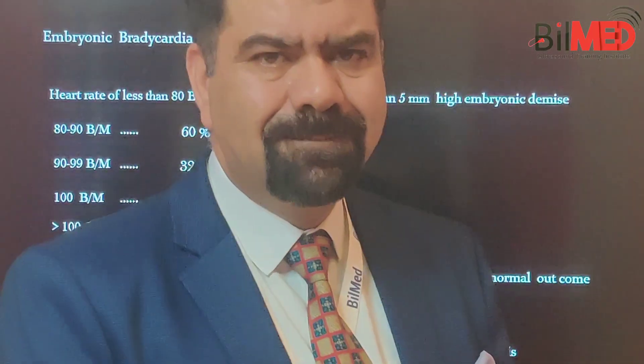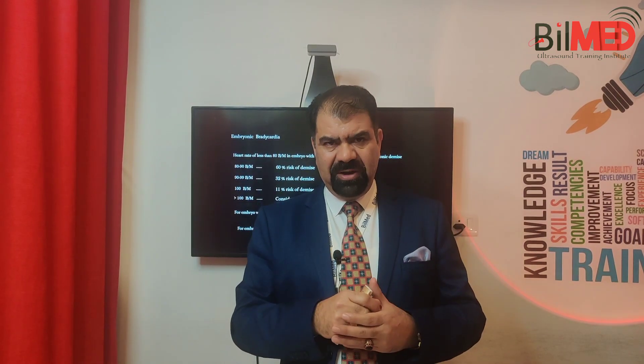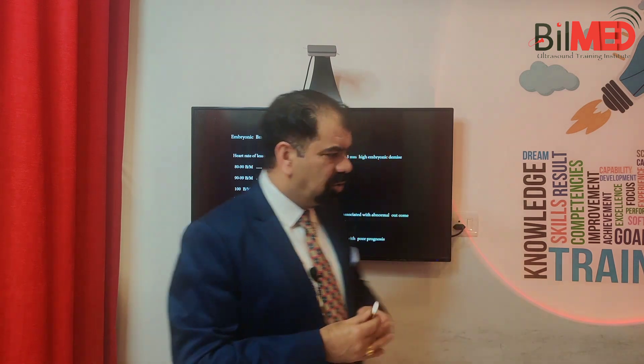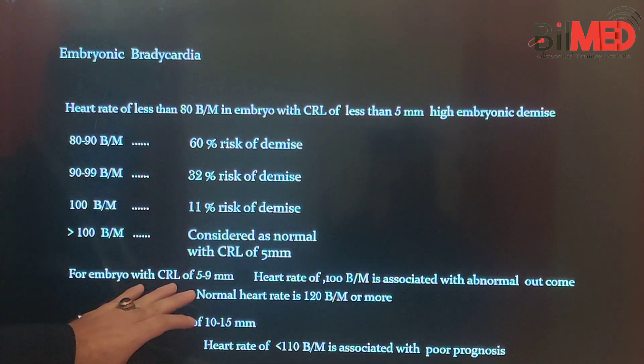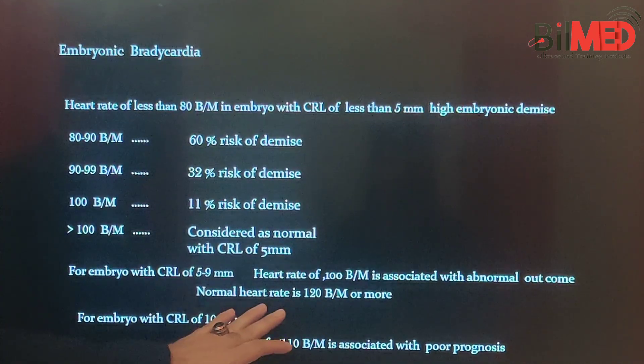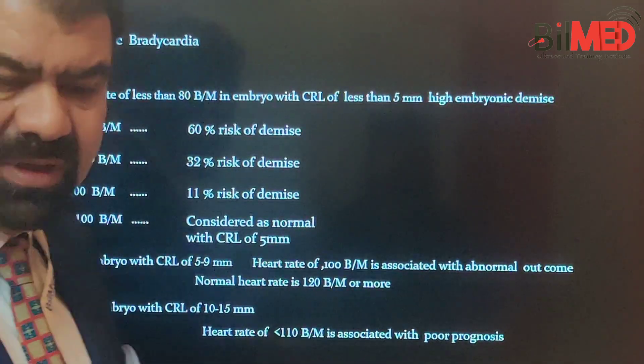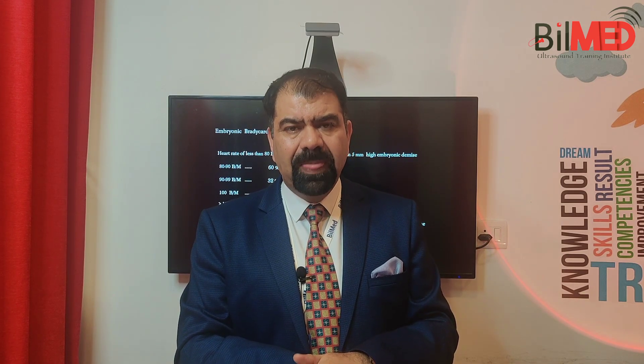Whenever there is fetal bradycardia — whenever the fetal heart rate is dropping — that is not a good sign and carries a poor prognosis. Always check the CRL: when it is less than 5 millimeters, ensure the fetal heart rate is more than 100 bpm; when CRL is 5 to 9 millimeters, the heart rate should be more than 120 bpm. Correlate heart rate with CRL and label fetal bradycardia so your consultant is alerted and necessary precautions are taken to prevent fetal loss.